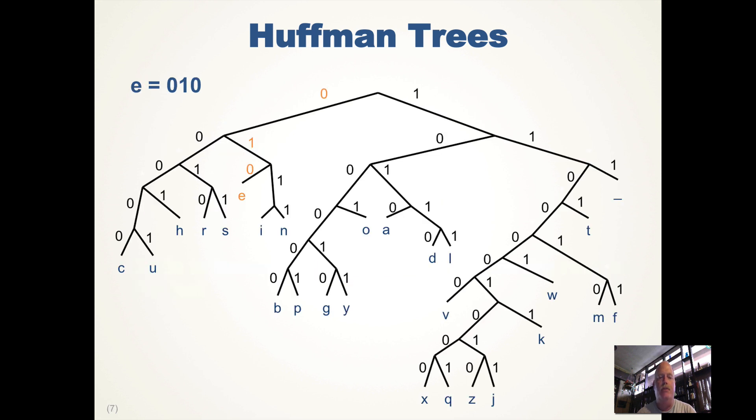For example, the character E Huffman code is 010 because we traverse from the root: we go left which is 0, we go right which is 1, we go left to E. Similarly, B is 1000000 because we go right and then traverse left until we finally reach the leaf B.